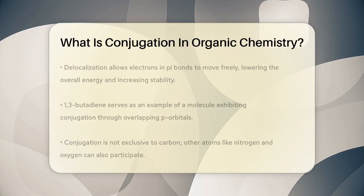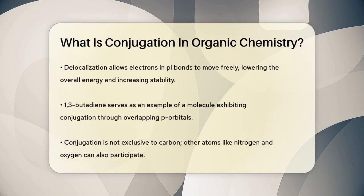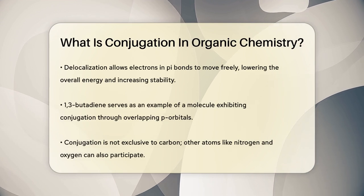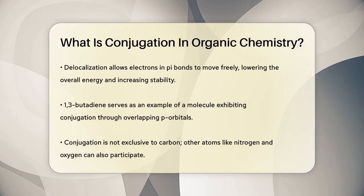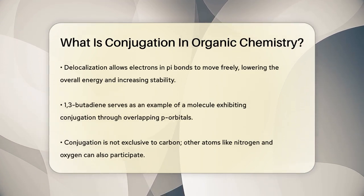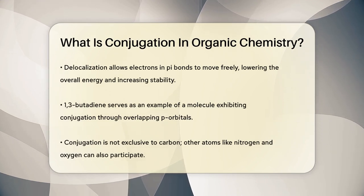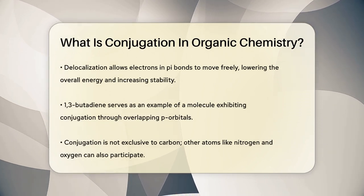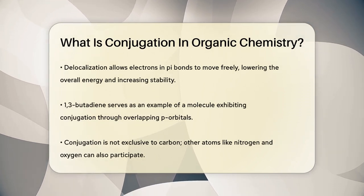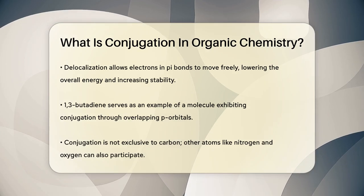In simple terms, when you have alternating single and double bonds in a molecule, like in 1,3-butadiene, the p orbitals of the double bonds overlap. This overlap allows the electrons in the pi bonds to move freely across the molecule, a process called delocalization.